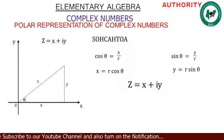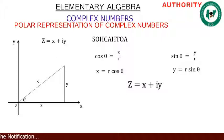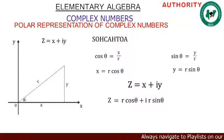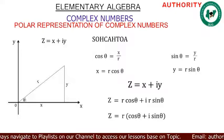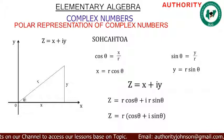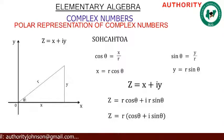In our complex number we have z equals x plus iy. We have found x and y, so let's replace them. We get z equals r·cos θ plus i·r·sin θ. We notice r appears in both terms, so factoring out r gives z equals r(cos θ + i·sin θ).